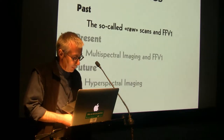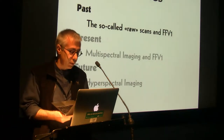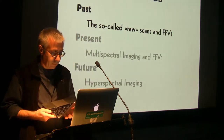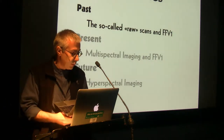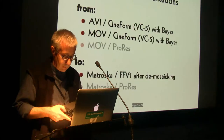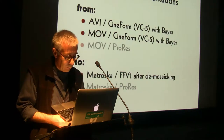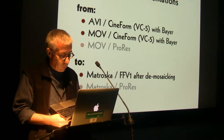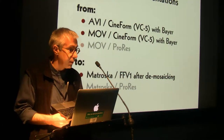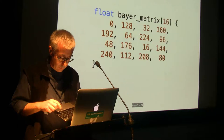Let's start with the past. The majority of current film scanners use Bayer pattern sensors, as we have heard, and codecs like CineForm RAW or the new ProRes RAW allow to store this data, but the current FFV1 version 3 doesn't. I suggested in my last year's presentation at IASA number two in Vienna that FFV1 should implement in version 4 the possibility to store and handle native Bayer-based content as well.